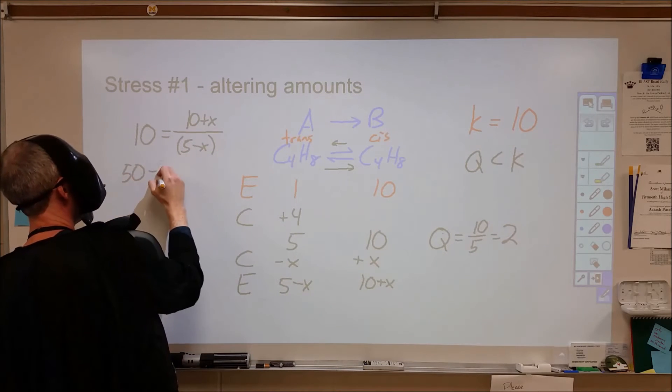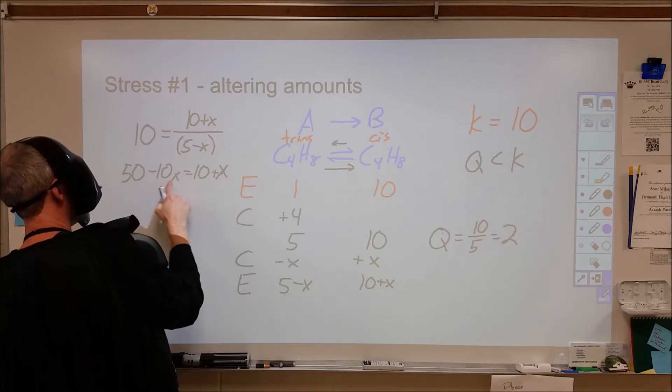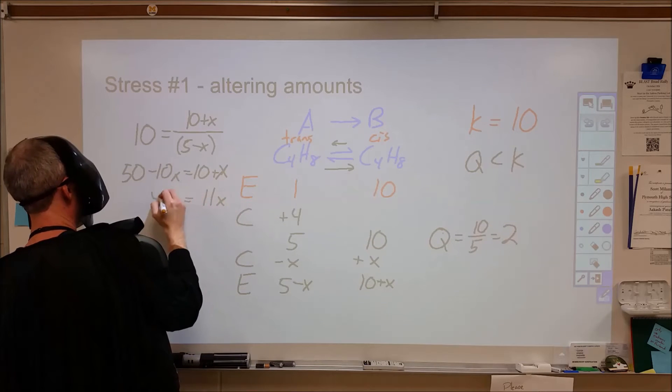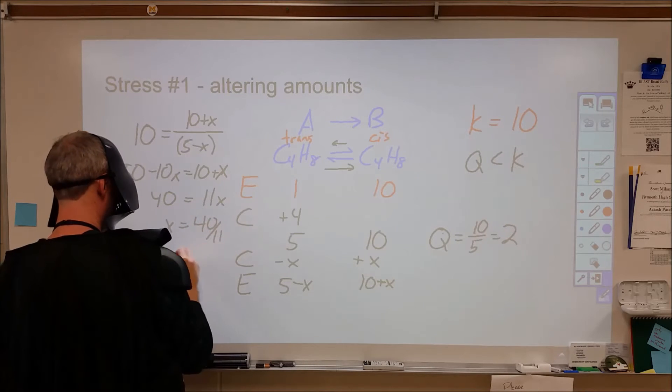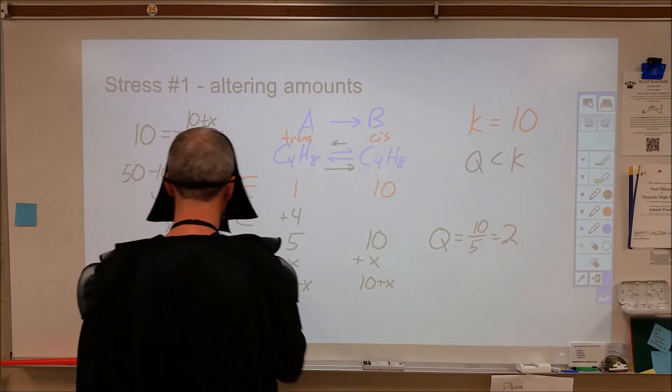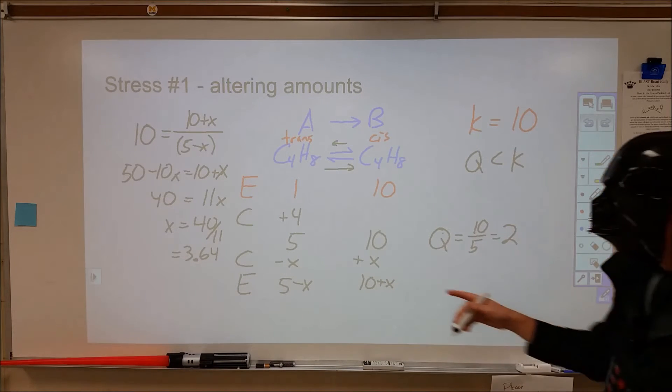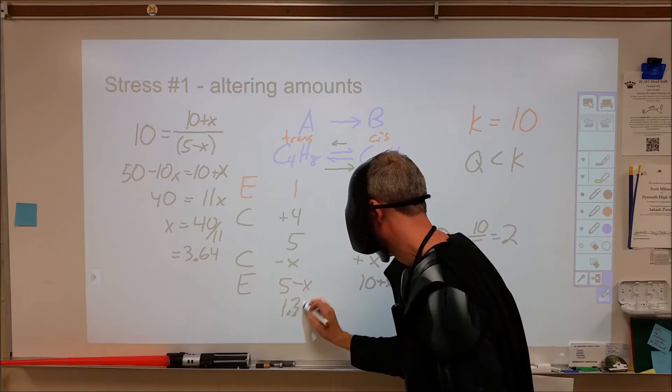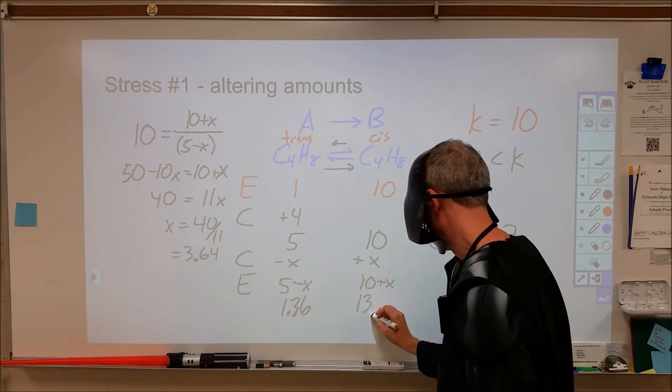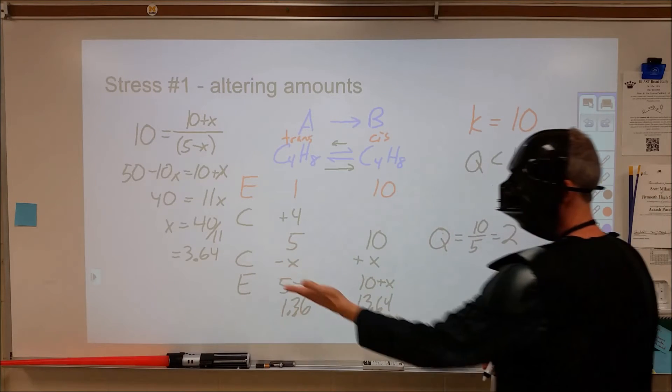Pulling this over here, we get 50 minus 10X is equal to 10 plus X. If we rearrange this, we get 11X on this side and 40 on this side. X is therefore 40 divided by 11, which I believe is 3.64. From there, we can now plug this in. At equilibrium, we have 1.36 and 13.64. We have now re-established equilibrium because this divided by this is going to come out to 10.